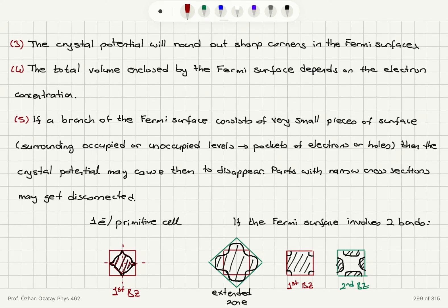If a branch of the Fermi surface consists of very small pieces of surface surrounding occupied or unoccupied levels, pockets of electrons or holes, then the crystal potential may cause them to disappear. Parts with narrow cross sections may get disconnected. So some small areas where we have pockets of electrons or holes may disappear in the nearly free electron case.